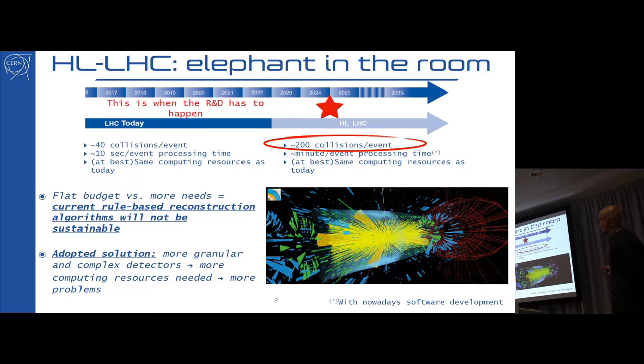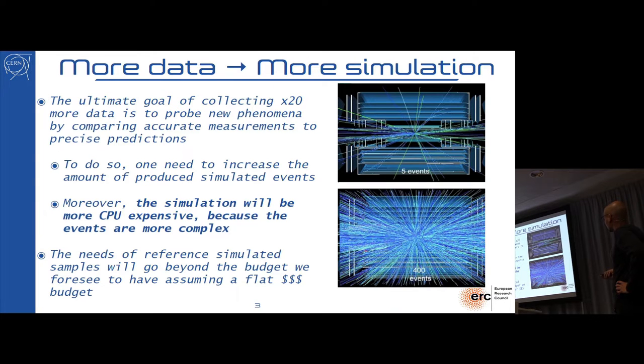The price to pay is that when we do the collision, we get 200 collisions in parallel, so you get 200 images overlapping. You take the screenshot and you don't know what is what. These more complex things will require a lot of machine learning to disentangle and reconstruct.